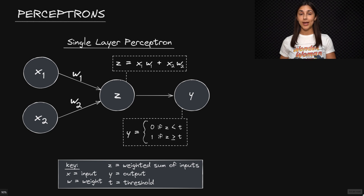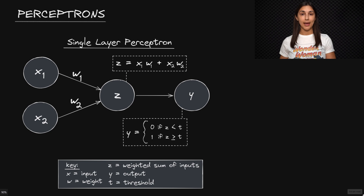The weights in a single layer perceptron are first randomly initialized, and then later through a training process, the perceptron will learn the optimal values for these weights, which most accurately map the inputs to the correct binary output.